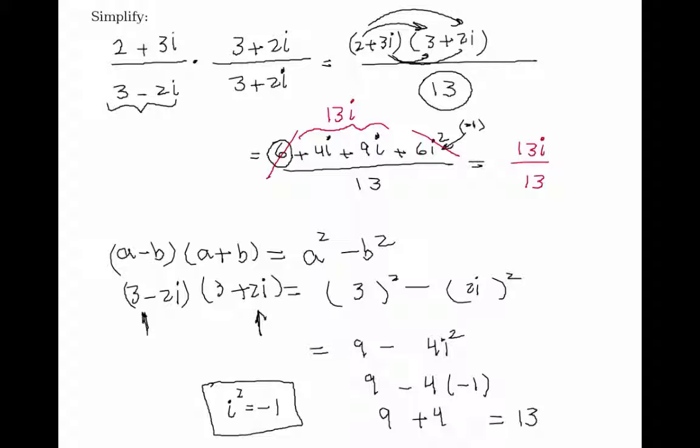So it looks like this 13 and 13 also reduces. In this case, the whole thing would be equal to i, or i over 1. And that's how you can simplify that. Thank you very much.